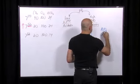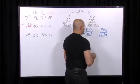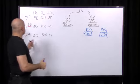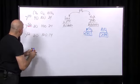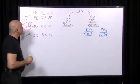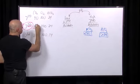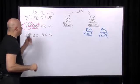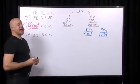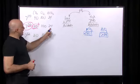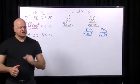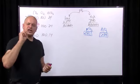If the bicarbonate is high, the main problem is a metabolic alkalosis. Looking at this person: the pH is high (alkalosis), the CO2 is low, so this must be a primary respiratory alkalosis. The bicarbonate is normal.